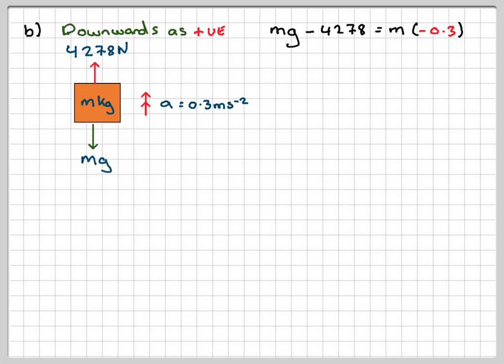So it doesn't really matter which way you do it, you just need to take into account which way you're acting as positive. So as I'm doing downwards as positive, it's this one minus this one is equal to ma.